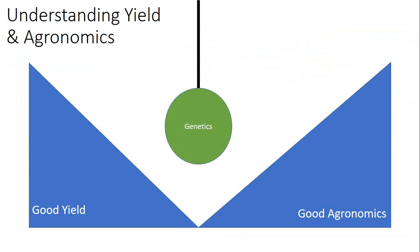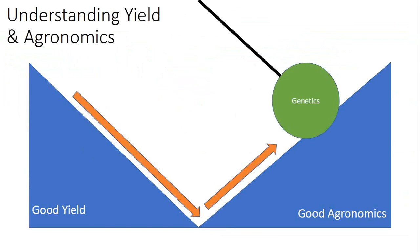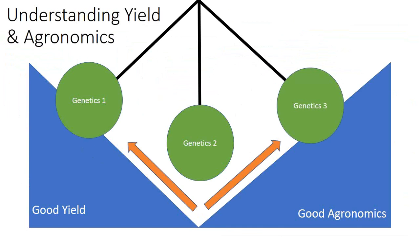When thinking about the function of yield, there are internal factors — good genetics like its ability to handle wet feet, canopy structure, disease package — and external factors like weed competition, drainage, heat, and water. It's important to select genetics and understand which are offensive high-yield types versus defensive agronomic types, and place them accordingly. Genetic one might be offensive but needs managed agronomics; genetic three might be defensive; genetic two can go either direction.